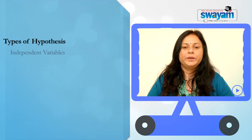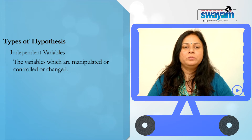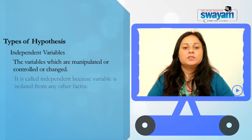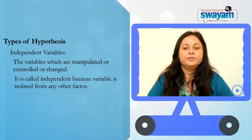Independent variable — the variables which are manipulated or controlled or changed. These are also known as manipulated variables. Researchers often mistake independent variables and assume that it is independent of any manipulation. It is called independent because the variable is isolated from any other factor.